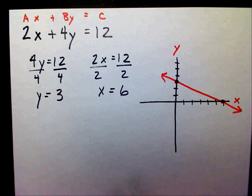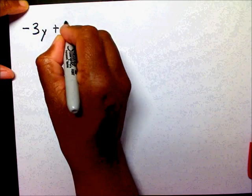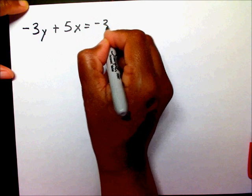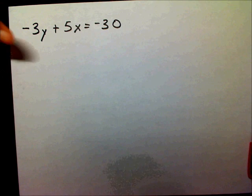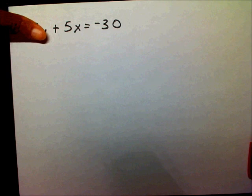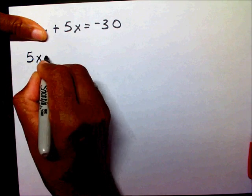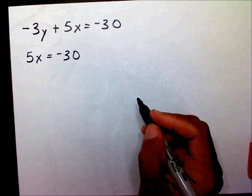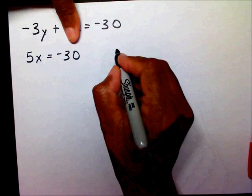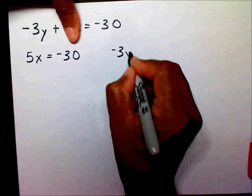Let's try another one. I have negative 3y plus 5x equals negative 30. I'm going to cover up my first term — my y term — which will leave me with 5x equals negative 30. Then I'm going to cover up my x term, which leaves me with negative 3y equals negative 30.